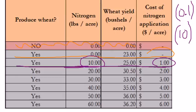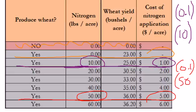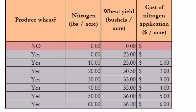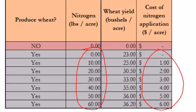What if we want to apply 50 pounds of nitrogen fertilizer? Why is the cost five dollars? The reason is that the price of nitrogen is 10 cents and we are applying 50 pounds, so 0.1 times 50 equals five. Using those formulas for every nitrogen application level gives you the cost of nitrogen application across the entire table.